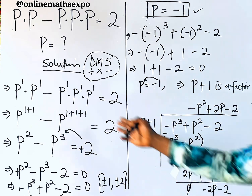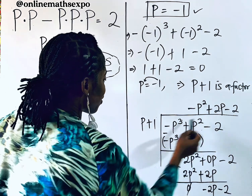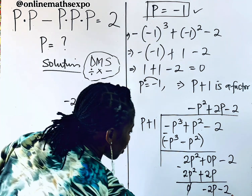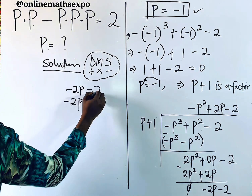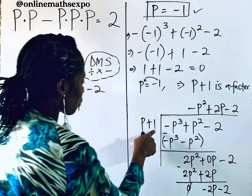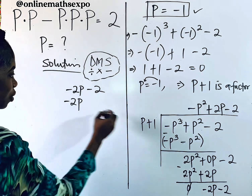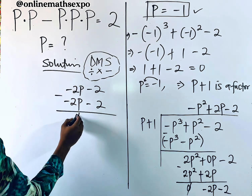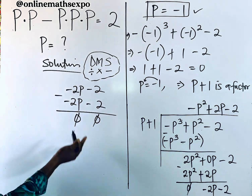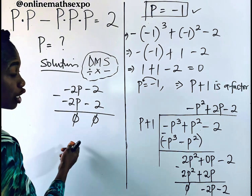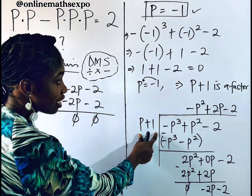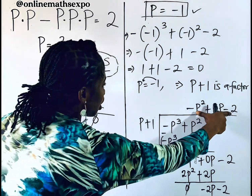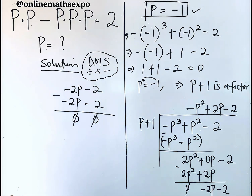Divide p into −2p: that gives −2. Multiply −2 by the divisor (p + 1): −2 times p gives −2p, and −2 times 1 gives −2. Subtract: both terms give zero with no remainder. This confirms (p + 1) is indeed a factor and p = −1 is correct.